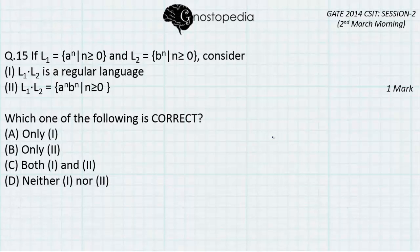If L1 is equal to a raised to n where n is greater than or equal to 0 and L2 is equal to b raised to n where n is greater than or equal to 0, consider the following statements. First, L1.L2 or L1 concatenated with L2 is a regular language. Second, L1 concatenated with L2 is equal to a raised to n, b raised to n where n is greater than or equal to 0. You need to find the truth in each of these statements.